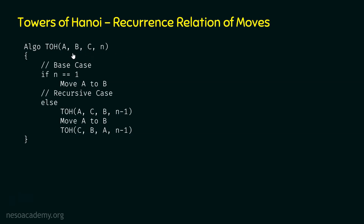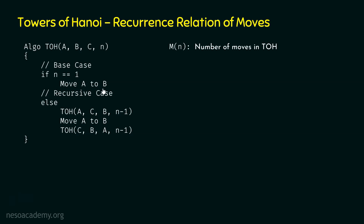This time, we are not interested in writing the recurrence relation of time, but the recurrence relation of moves. Let us assume m represents the number of moves in Towers of Hanoi. We used to represent time with T; we are representing moves with m. So this is m of n, where the input n represents the number of disks. Now let's write the recurrence relation of moves. First, we need to observe the base case. In the base case, if n is equal to 1, then we need to perform just one move.